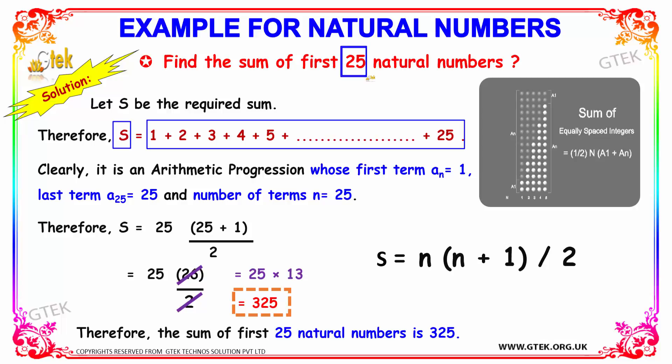...clearly it is observed that it is an arithmetic progression whose first term a₁ = 1. So the first term which we have over here is 1. And the last term, since we have 25 as the last term, we can mention a₂₅ = 25. And the number of terms is n = 25.